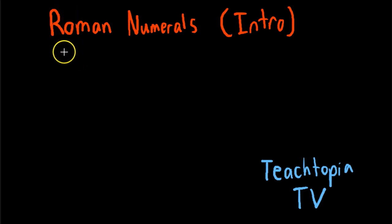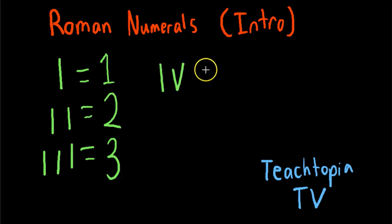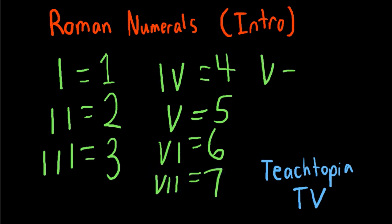So Roman numeral 1 is generally going to be written like this. This equals what you're familiar with as a 1. Roman numeral 2, Roman numeral 3, Roman numeral 4, Roman numeral 5, Roman numeral 6, Roman numeral 7, Roman numeral 8, Roman numeral 9.